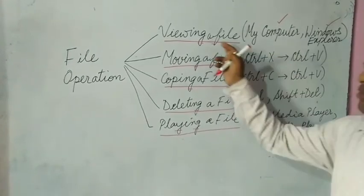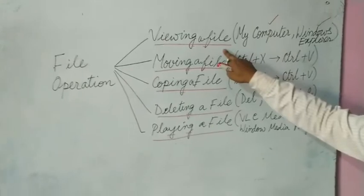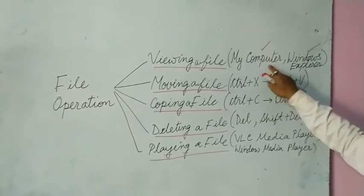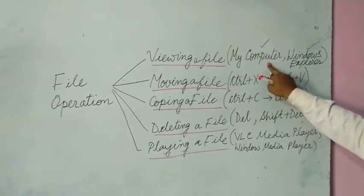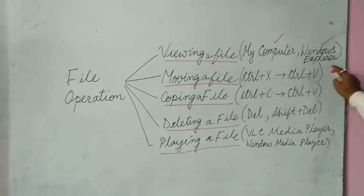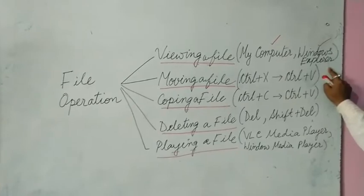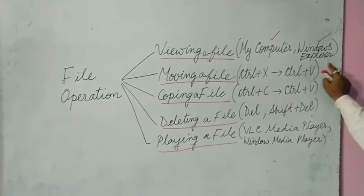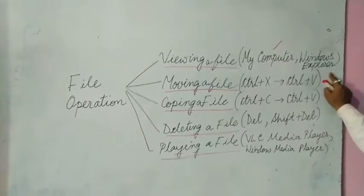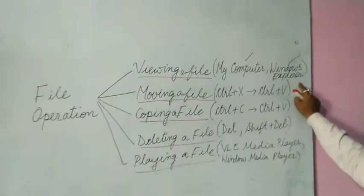To view a file present in your computer, it can be done in two ways: using My Computer, which is present on your desktop, or with the help of Windows Explorer. With Windows Explorer you will be accessing your local drives — C drive, D drive, F drive, G drive, pen drive, or any other drives — and files can be easily viewed, opened, accessed, and stored.